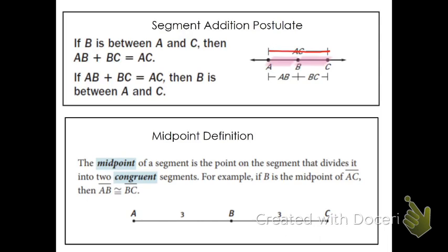For example, if this segment had a length of three and this segment had a length of five, we know that the whole segment has a length of eight. That is a 'duh' thing, so we call it a postulate.